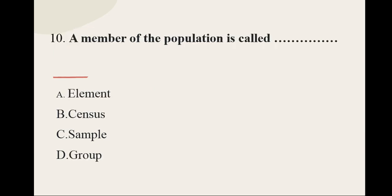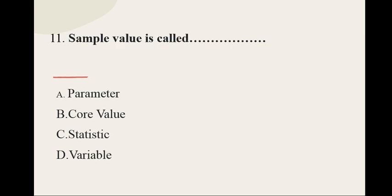Question number ten: A member of the population is called a blank — and the options are: element, census, sample, group. The correct option for question number ten is element.